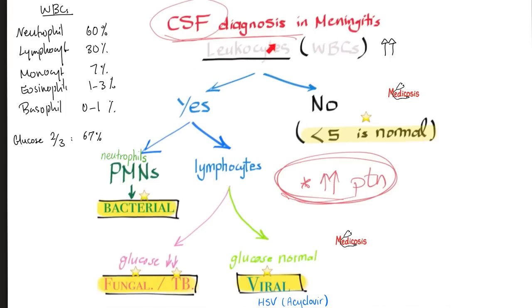Back to lumbar puncture: we may perform it to diagnose meningitis, encephalitis, or meningoencephalitis. Meningitis means inflammation of the meninges. Inflammation means lots of white blood cells. If we find leukocytosis — more than 5 cells per microliter — this could indicate meningitis. Fewer than 5 cells per microliter is normal; above that suggests inflammation.